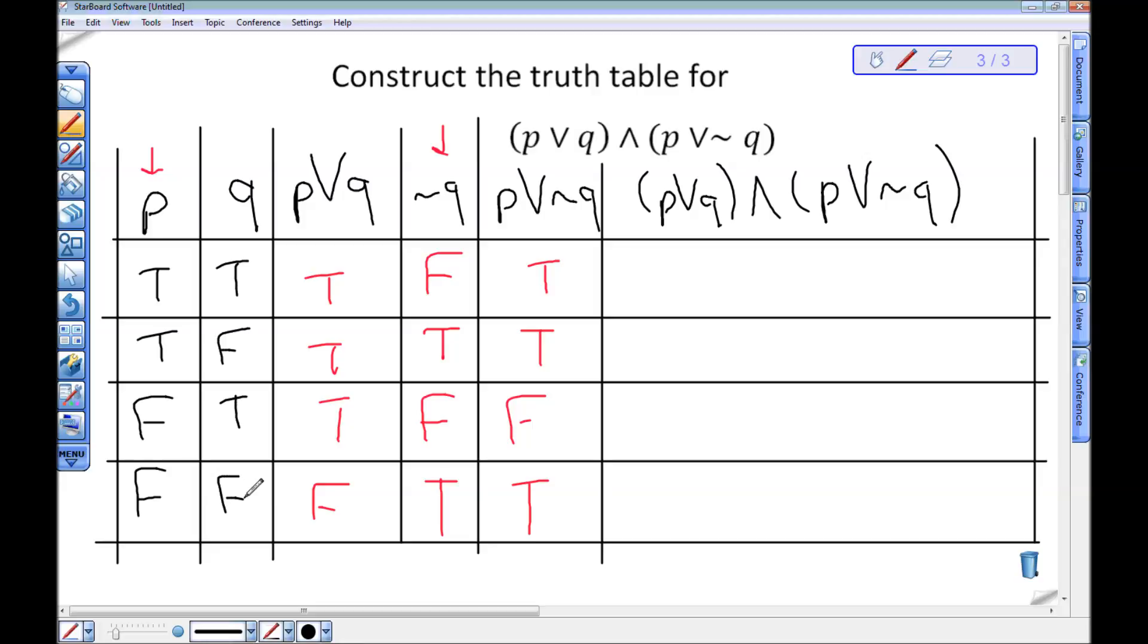Now I'm ready to do my last column. Notice that my last column is made up of two of the columns I already have. It is P or Q, which I have right here. And then it is P or not Q, which I have right here. And then I want to use and in between them. So to do this last column, I'm going to ignore this one. And really I'm going to ignore the first two, but those are at least out of my way. And I'm going to look at my truth table for and, my conjunction truth table.